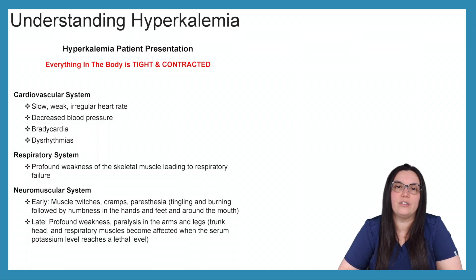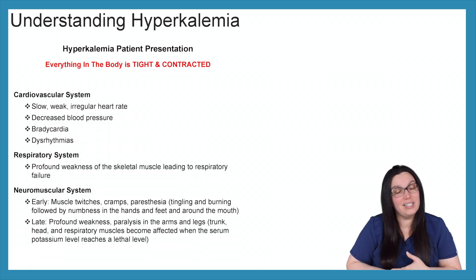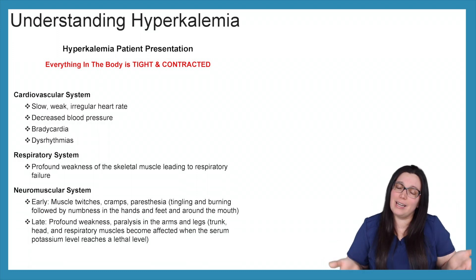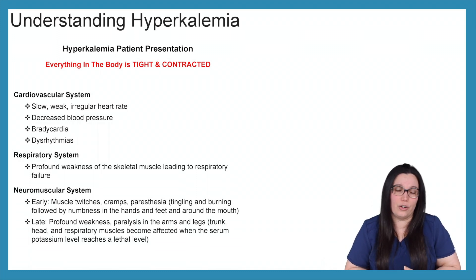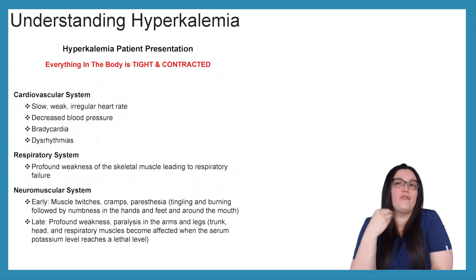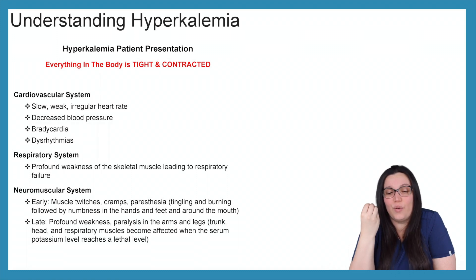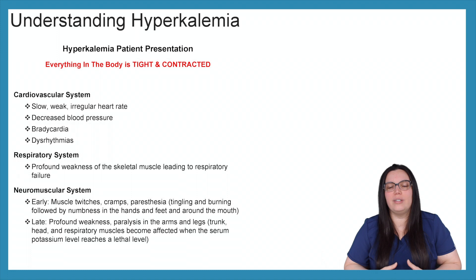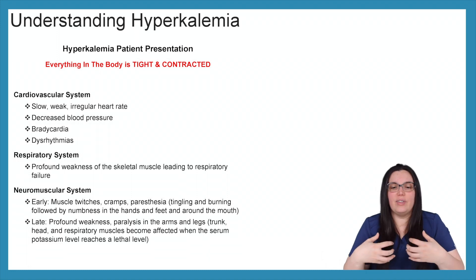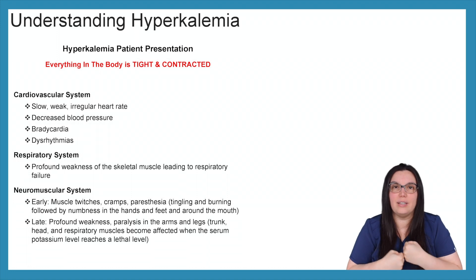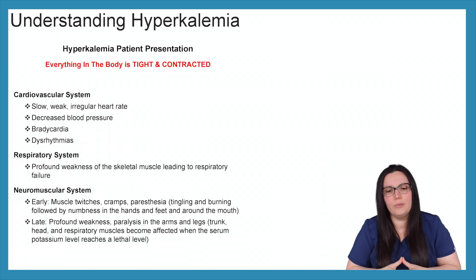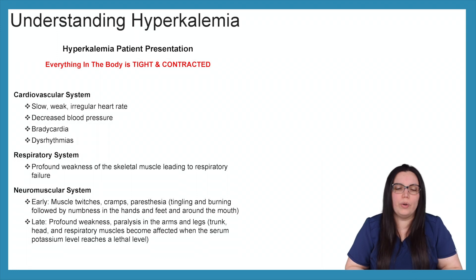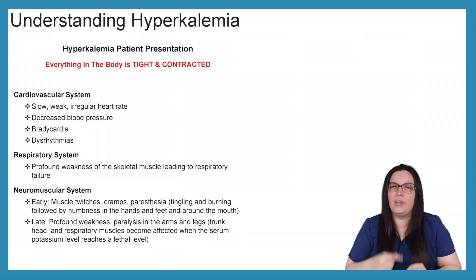When it comes to the cardiovascular system, we're going to see slow, weak, irregular heart rates, decreased blood pressures, and a lot of bradycardias as well as dysrhythmias — any electrolyte change, you're going to see something on your EKG. When it comes to the respiratory system, we're going to have profound weakness of the skeletal muscle resulting in respiratory failure — remember, profound is a late sign. For the neuromuscular system, early on you're going to see muscle twitching, cramps, tingling and burning, followed by numbness in your hands and feet, especially around your mouth.